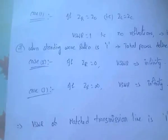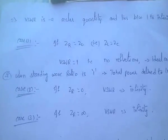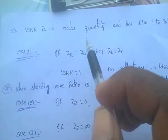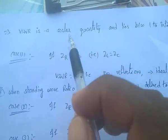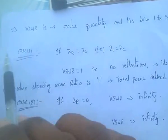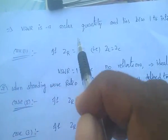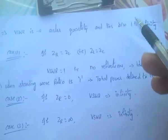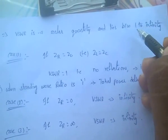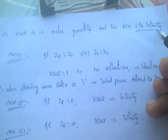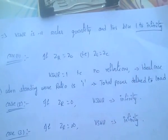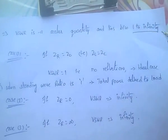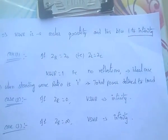VSWR, that is voltage standing wave ratio, is a scalar quantity — not a vector quantity. It lies between 1 to infinity. VSWR values lie between 1 to infinity — very, very important.